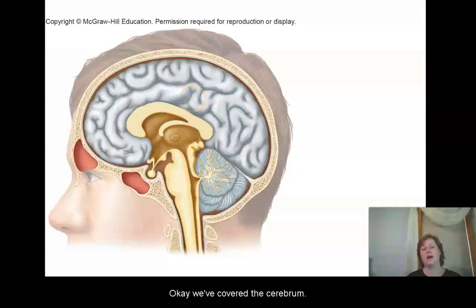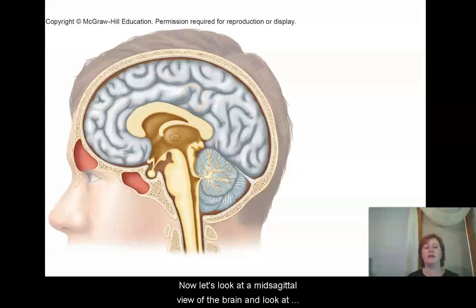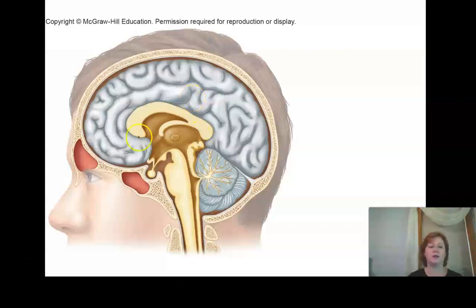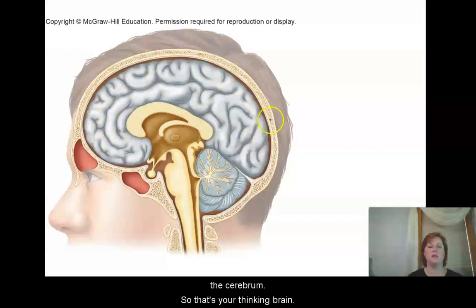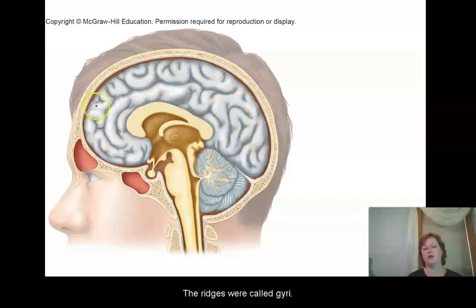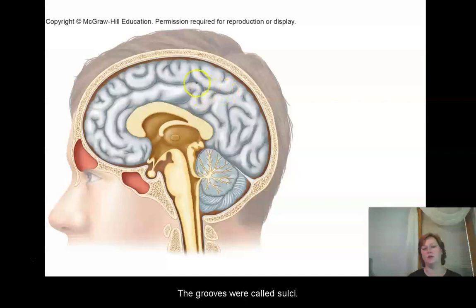We've covered the cerebrum. Now let's look at a mid-sagittal view of the brain and look at some other structures. This wrinkly part up here is the cerebrum, your thinking brain. The ridges were called gyri and the grooves were called sulci.